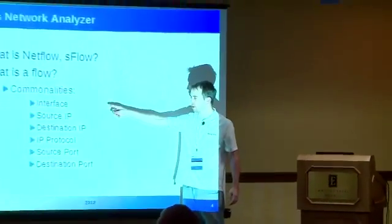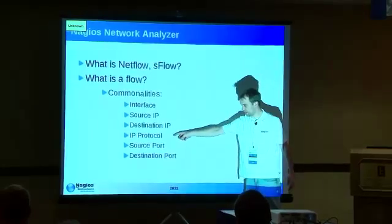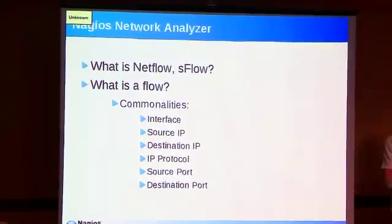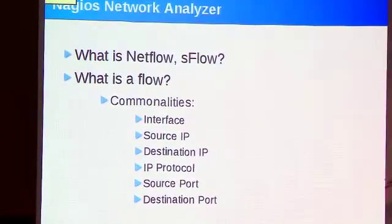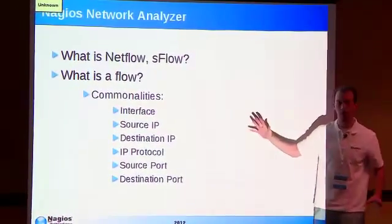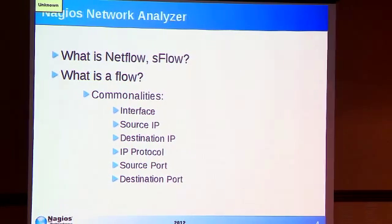Every time there's a connection sharing the same interface on a router, starting at one IP and going to another IP, using a certain IP protocol, starting at one port and going to a destination port — netflow rolls all of that together into what's called a flow. That's what Cisco started calling a netflow, and that's essentially where it kept going afterwards.